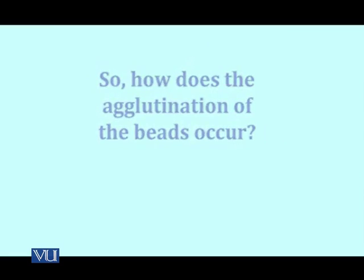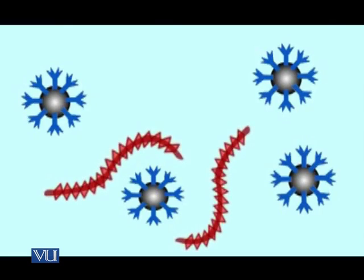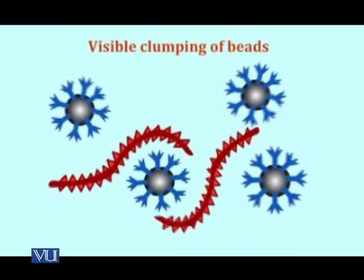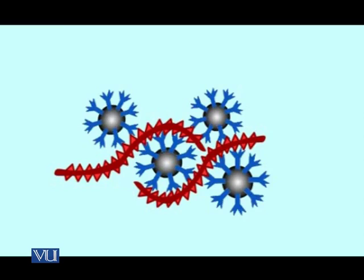The latex beads are coated with a specific antibody so each bead can bind to numerous antigens. For agglutination to work, the antigen must also be able to bind to multiple beads. Therefore, antigens that can be detected are limited to large macromolecules with repetitive antigenic domains — molecules like microbial capsules, flagella, or lipopolysaccharides. One long repeating antigen molecule can attach to several beads, causing them to clump together, so even very tiny quantities of antigens with lots of repeating domains can cause visible clumps detectable by this test.